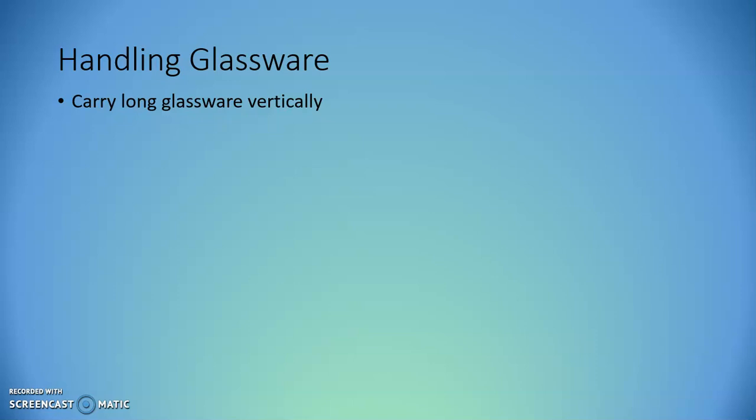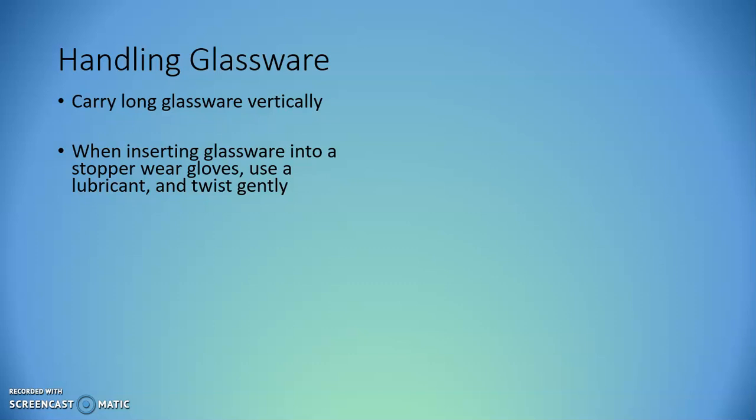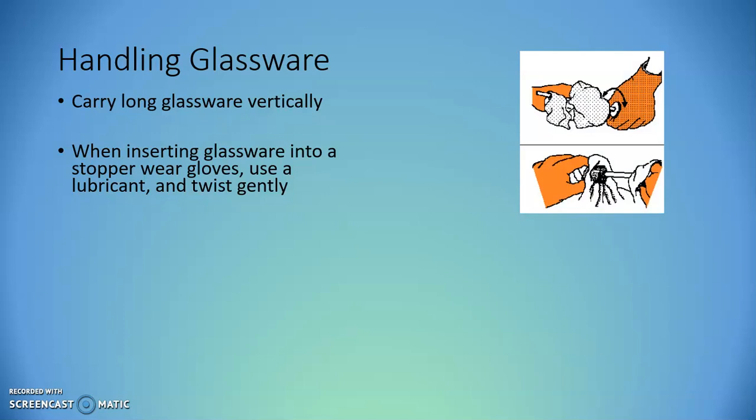If you have a glass tube or a glass rod that you are carrying, you want to carry it vertically in front of you because you're much more aware of what's going on in front of you than off to your sides. If that glass rod needs to be placed into a stopper, you should make sure you're wearing gloves, have it slightly lubricated so it slides more easily through that stopper, and do so in a gentle twisting motion, as you see here, wearing those orange gloves, twisting that glass tube into the stopper to insert it completely.